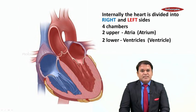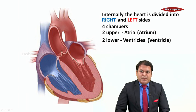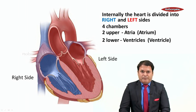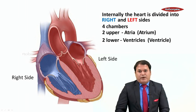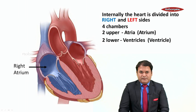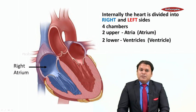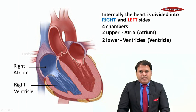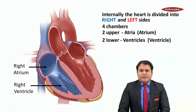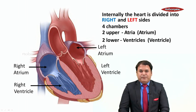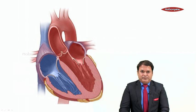So students, you can see the atria which are the upper chambers and the ventricles which are the lower chambers. And our heart is divided into a right side and a left side. So in all, these are the four chambers of the heart: the right atrium, the right ventricle, the left atrium, and the left ventricle.